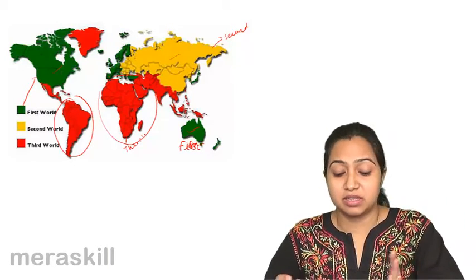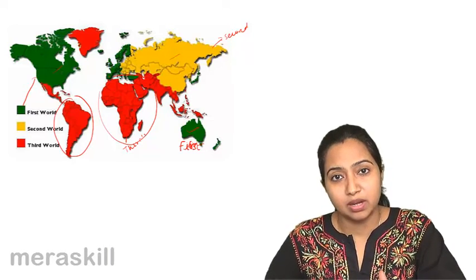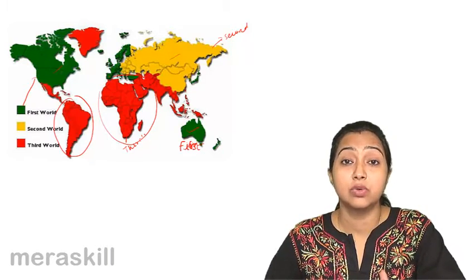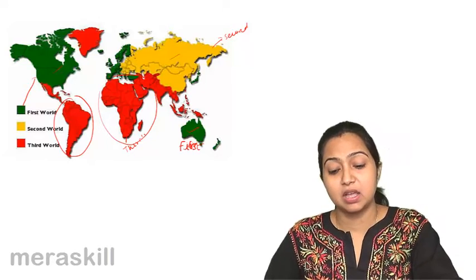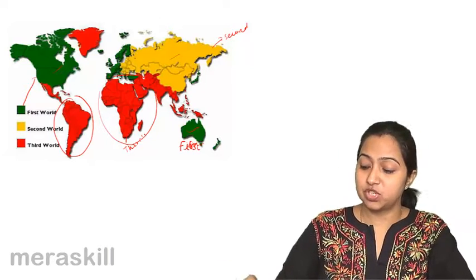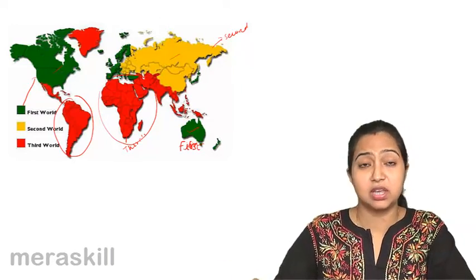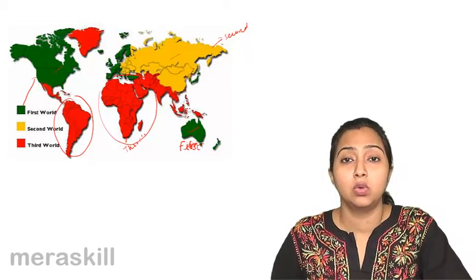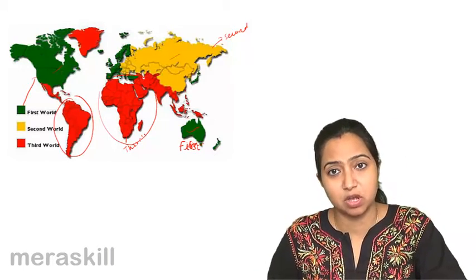The first world countries are the developed countries. They are the rich nations of the world, like America, Japan, Australia and New Zealand. We all know they are big economies and they are rich and progressive economies.